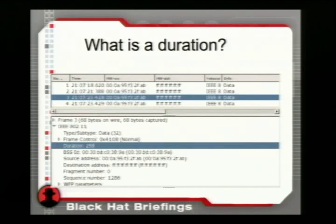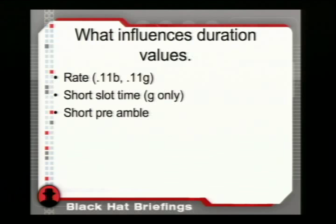The intent is: I've won the random backoff, I've got the air, and I'm going to send a packet to my buddy Dave. Since 802.11 data packets are acknowledged, I don't want Dave to have to win the battle for access control — I'm reserving the air so he can acknowledge me back. There are really only a few discrete values you'd expect — maybe 16 or 20. What influences this? The transmission rate is very important. There are also optimizations like short slot time and short preamble that affect the duration.